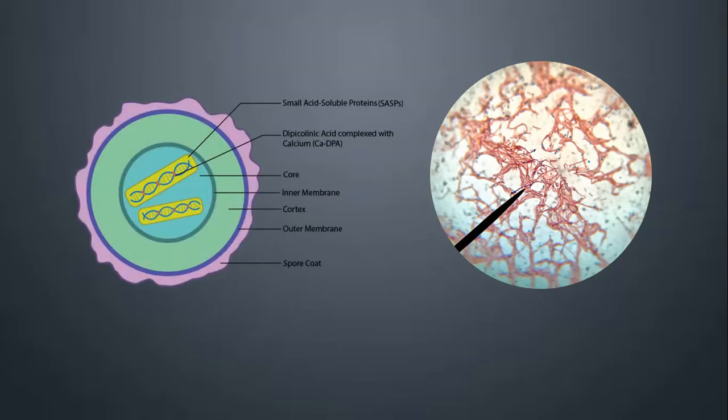The Endospore Staining Technique is a Differential Staining Method. This method helps in the detection of endospore-containing bacteria, thus helping in the classification of bacterial cells. Some bacterial cells have the ability to convert themselves into endospores in extreme environmental conditions, which helps them survive in harsh environments, high temperature, pH, etc.